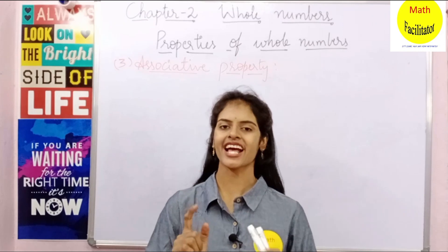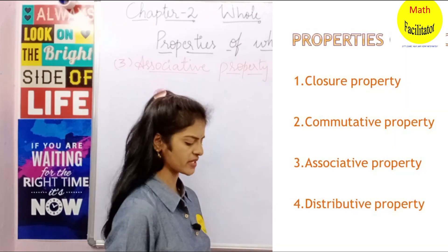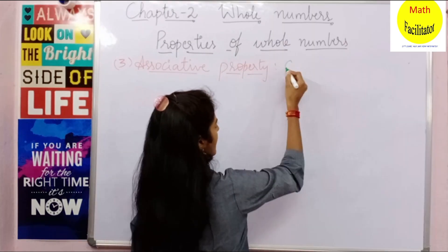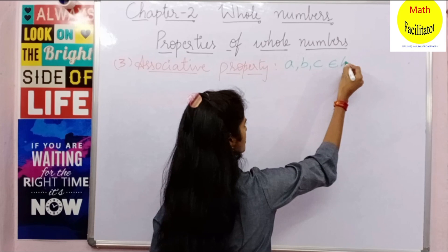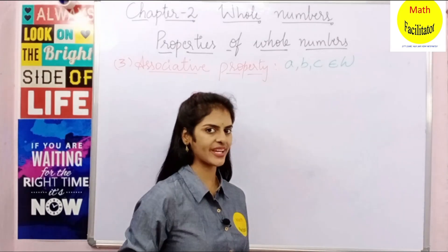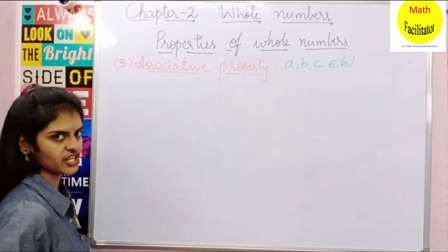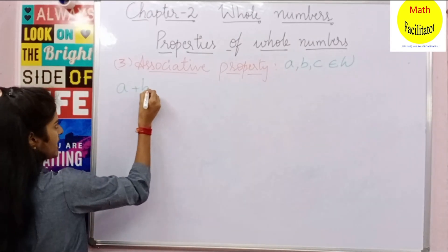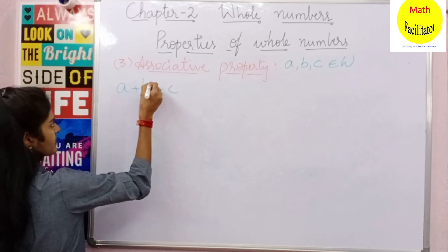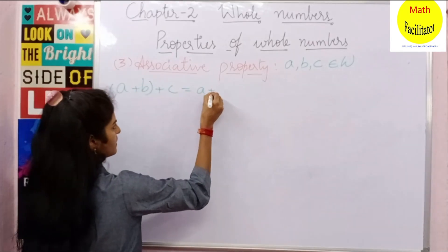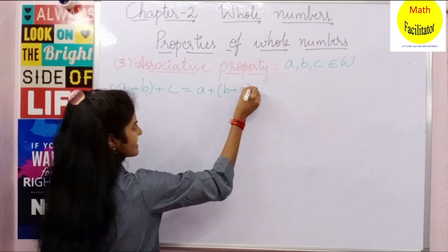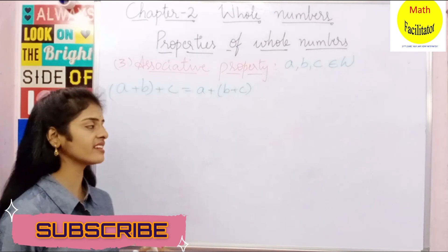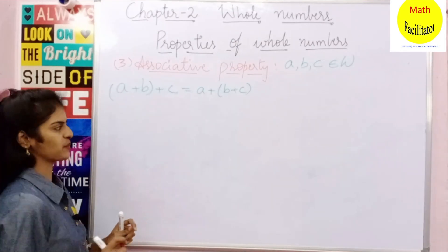The third property is associative property. What is associative property? Here we take 3 whole numbers. Let A, B, C belong to whole numbers. Let us check for addition first. The property for addition is: A plus (B plus C) should be equal to (A plus B) plus C. That means you add the 3 numbers in whichever order but the answer should be the same.